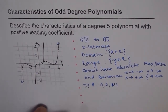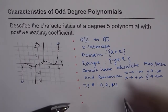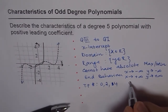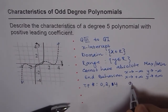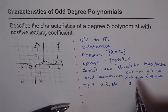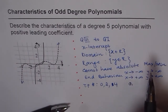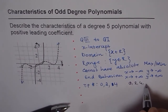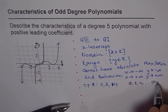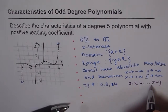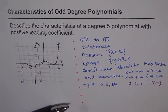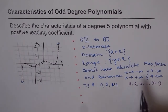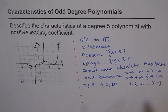For a general polynomial of degree n, the number of turning points can be 0, 2, 4, and so on, up to n minus 1. So n minus 1 is the maximum number of turning points, and 0 is the minimum number of turning points for a polynomial of degree n, where n is odd.